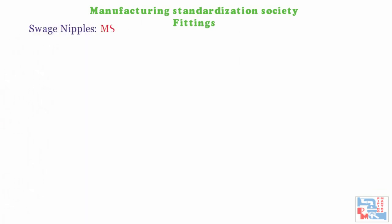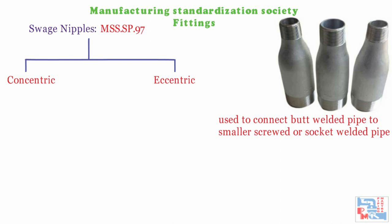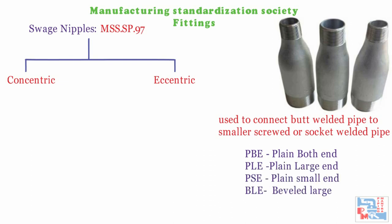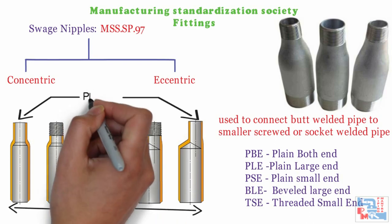Let's talk about special fittings by MSS — Manufacturing Standardization Society. First are swage nipples per MSS SP97. Swage nipples are like reducers but are used to connect butt welded pipe to smaller threaded or socket welded pipe. Like reducers, swage nipples are available in eccentric and concentric types. Various combinations of end connections are possible — PBE (plain both ends), PLE (plain large end), PSE (plain small end), BLE (beveled large end), TSE (threaded small end). Most conveniently, the larger end has a beveled end and the smaller end is plain or threaded.